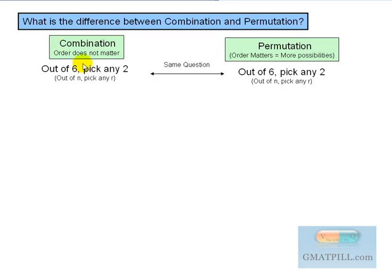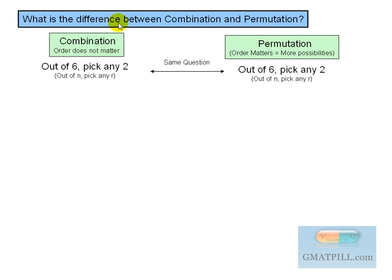What is the difference between a combination and a permutation question? I see this used quite a bit interchangeably on the GMAT exam. You don't really need to know verbally what the difference is, but you do need to know when to use combination and when to use permutation.